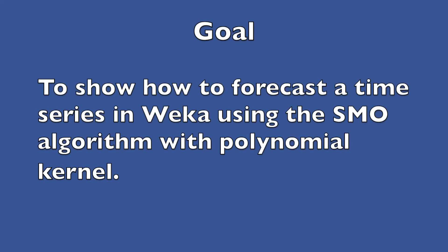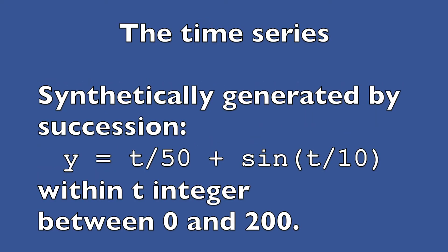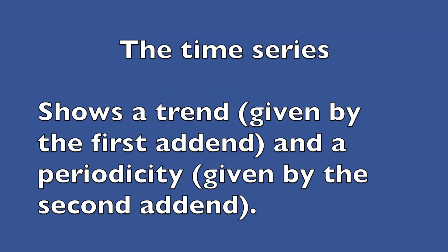The goal is to show how to forecast a time series in Weka using the SMO algorithm with polynomial kernel. The time series is synthetically generated by the succession t divided by 50 plus sine of t divided by 10, with t integer between 0 and 200. The time series shows a trend, given by the first term, and a periodicity, given by the second term.